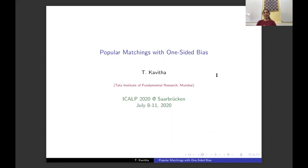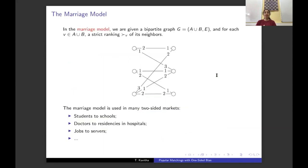My name is Kavitha and my paper is on popular matchings with one-sided bias. Our input is a bipartite graph and every vertex seeks to be matched to one of its neighbors. Each vertex has a preference order on its neighbors, where one denotes top choice, two denotes second choice, and being left unmatched is its worst choice. This is a well-studied model used in real-world applications such as matching students to schools and doctors to hospitals.